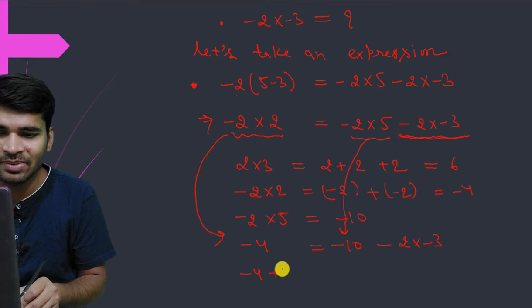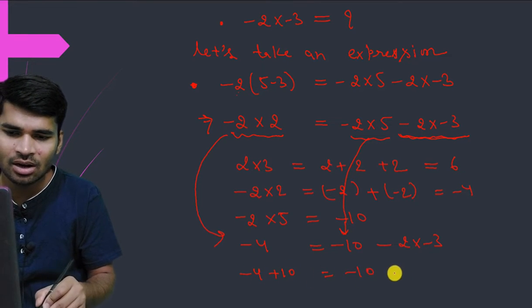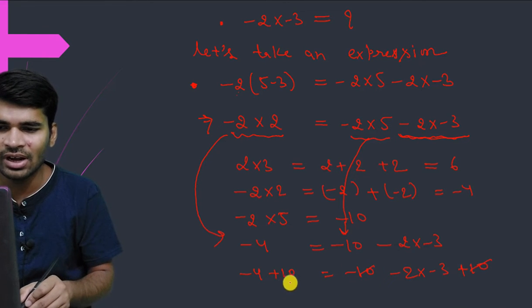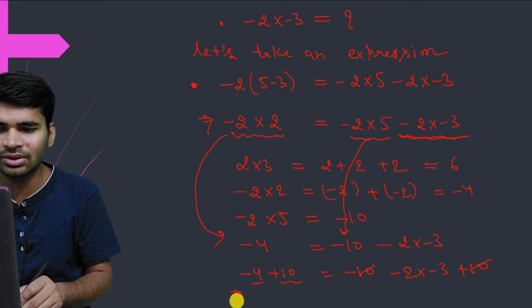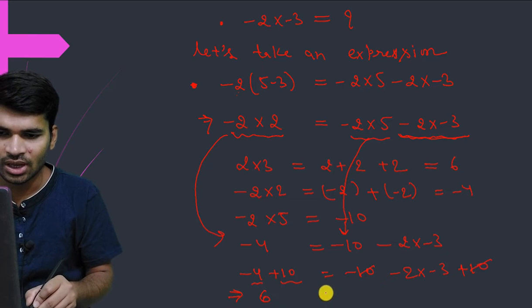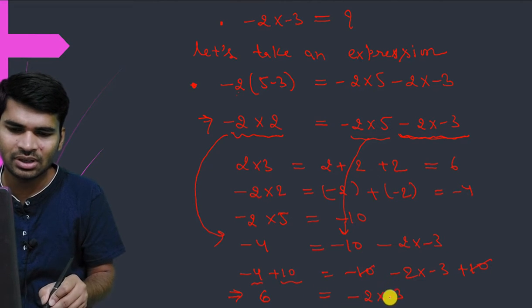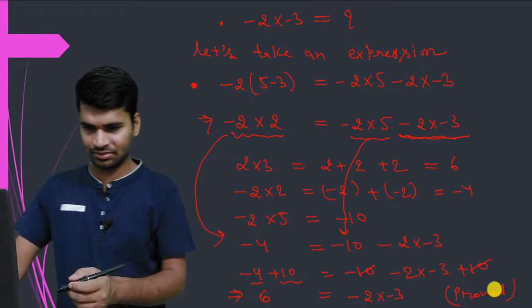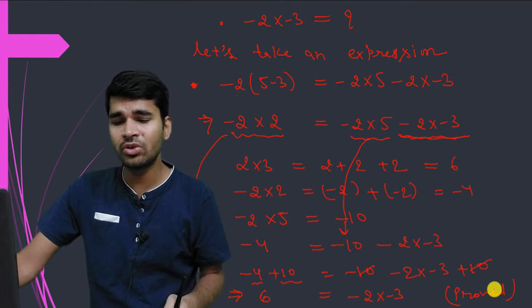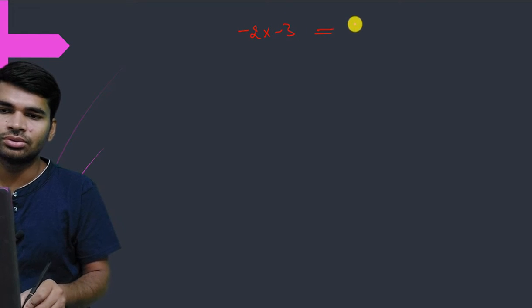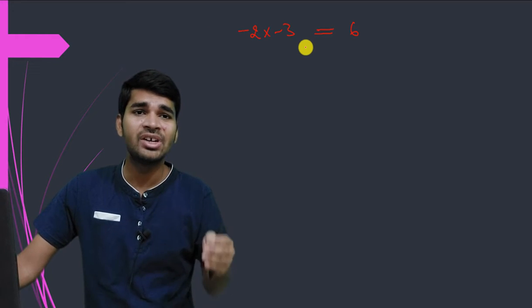Adding +10 to both sides: -4 + 10 on the left, and -10 + 10 cancels out, leaving (-2) times (-3) on the right. So 6 = (-2) times (-3). We have proved that (-2) times (-3) equals 6 with the help of the distributive law.